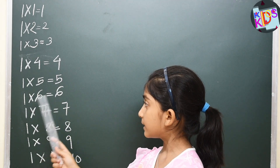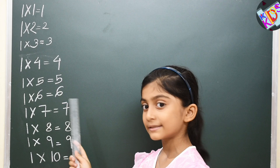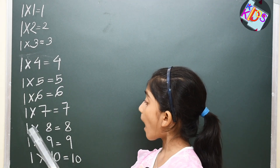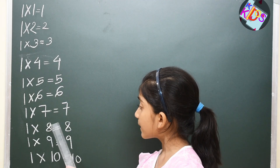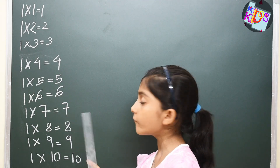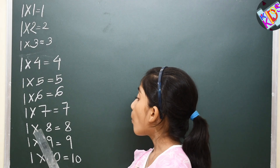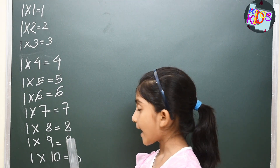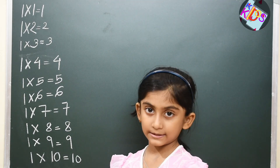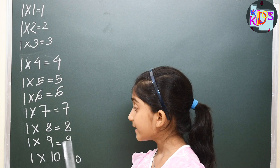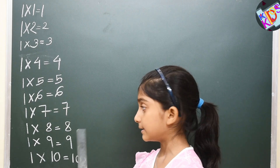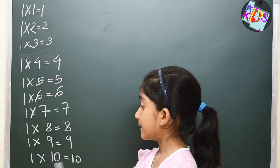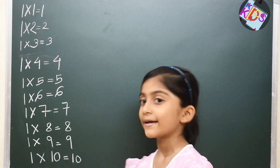One, six is a six. One, seven is a seven. One, eight is a eight. One, nine is a nine. One, ten is a ten.